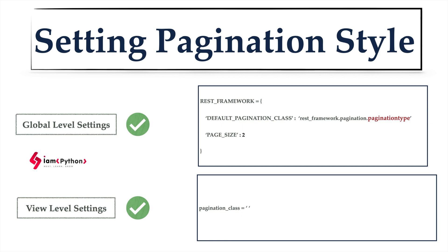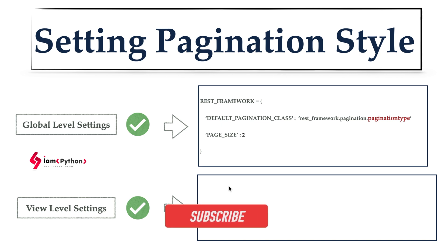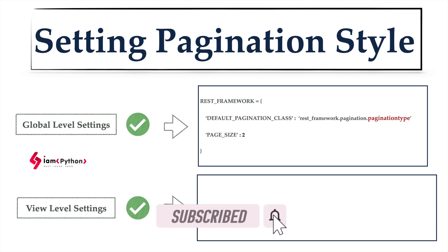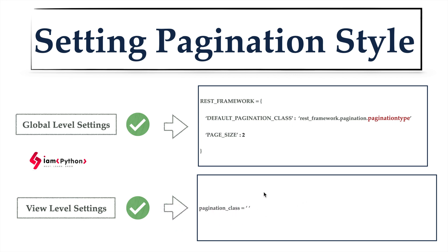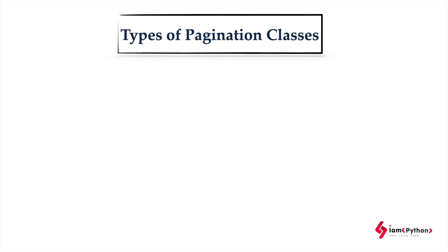For global-level settings, go to settings.py and add the REST_FRAMEWORK configuration with a DEFAULT_PAGINATION_CLASS. The pagination type depends on which pagination class you are using. For view-level settings, you can set the pagination_class attribute directly in your specific view — whether it's a ModelViewSet or a generic view.